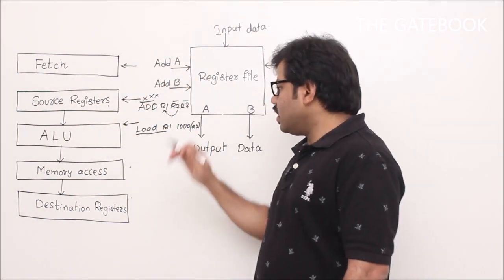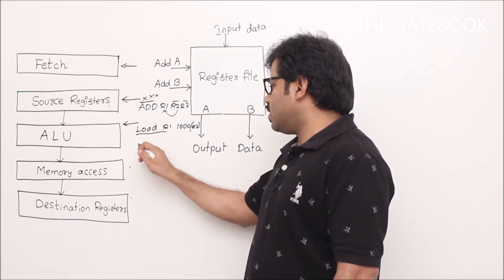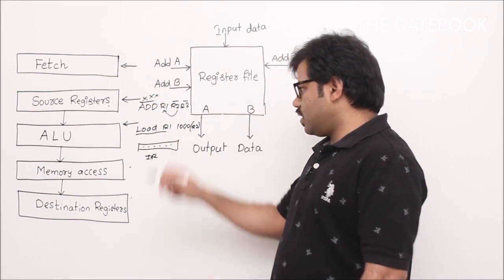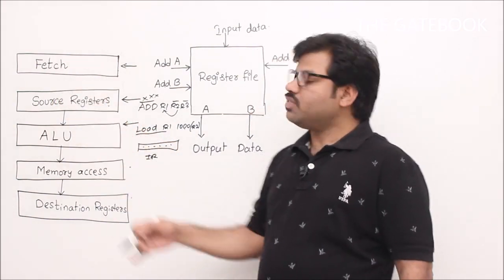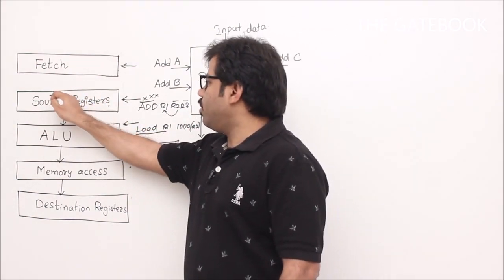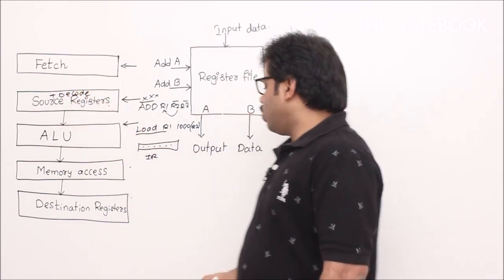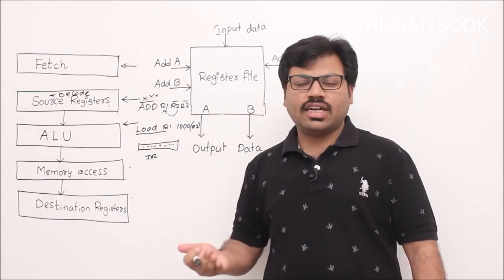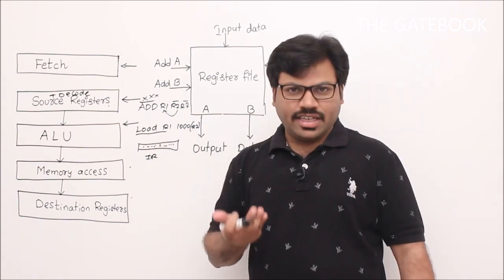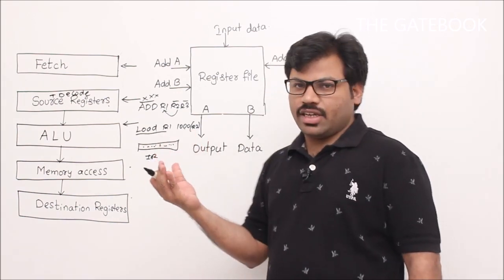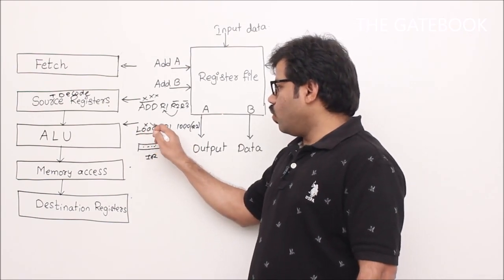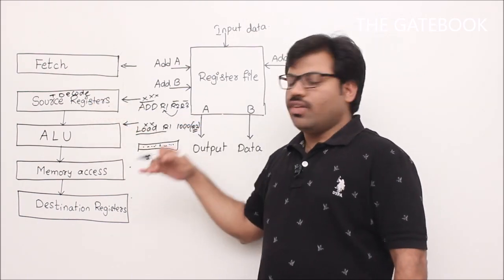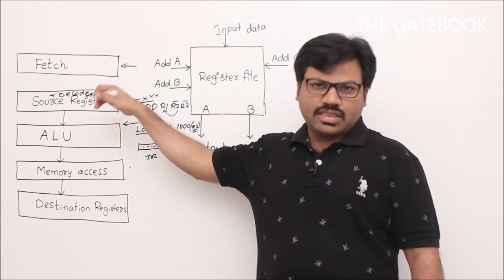Let me show how LOAD R1, 1000(R2) will be executed with respect to the various stages. In the first stage, we fetch the instruction and keep it in the instruction register. In the second stage, we decode it and read the required registers — here, specifically R2. In the third stage we do arithmetic: for a load instruction, arithmetic is required because 1000 plus the content of R2 gives the effective address. That addition is done in the ALU.